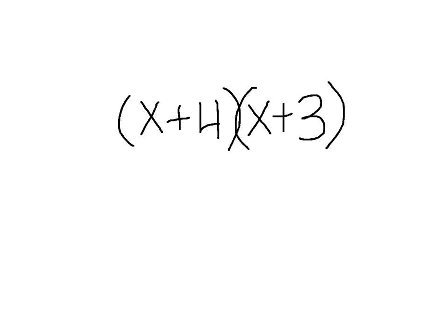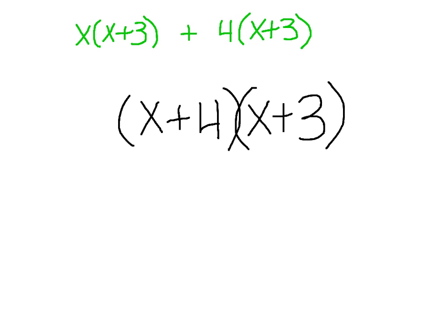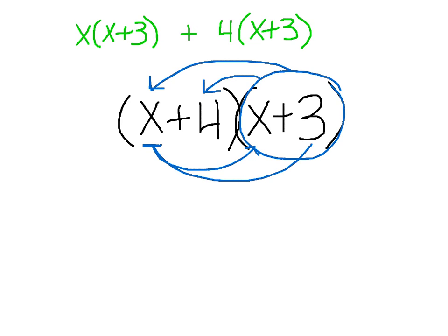Now let's look at how to multiply two binomials together. We're going to use the distributive property again, looking at it in almost two different steps. We'll view it as x times (x plus 3) plus 4 times (x plus 3). I'm taking my first term and applying it to each of the inside terms, then taking my second term and multiplying it with each of the inside terms.